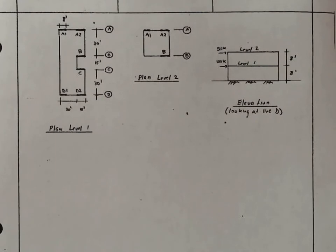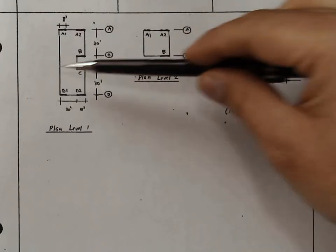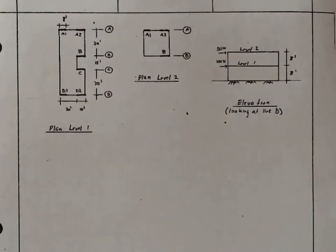The first task is to divide these forces, the 50 kips and the 100 kips, into each line of resistance. We'll start, I suppose because it's a little bit simpler, with the top story.